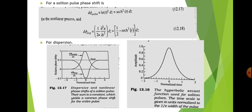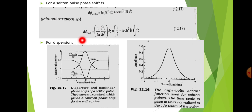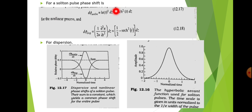Next we look at the phase shift associated with the soliton pulse. Due to the non-linear effect, the phase change is: dφ_nonlinear = |u(t)|² · dz = sech²(t) · dz. For the dispersion effect, the phase shift is: dφ_dispersion = (1/2u) · (∂²u/∂t²) · dz = (1/2)(-sech²(t)) · dz.